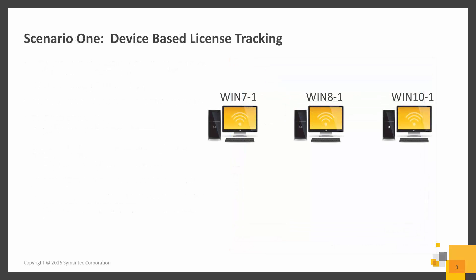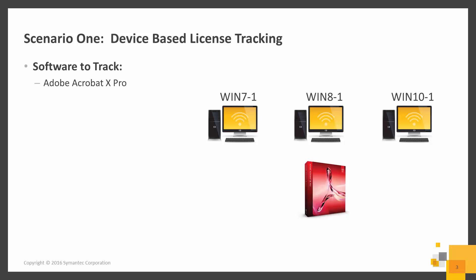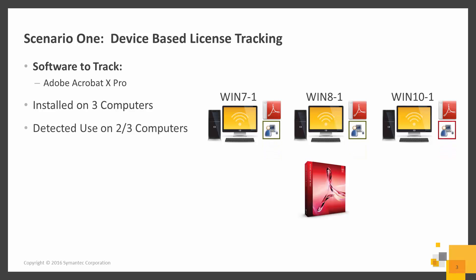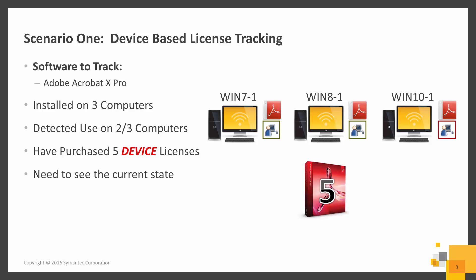In this demonstration, we will cover the device-based license tracking abilities. We will be tracking Adobe Acrobat 10 Professional. We have noted that it has been installed on three computers, with usage detected on two out of the three. We have also purchased five device-based licenses, and we need to see the current state of the license.